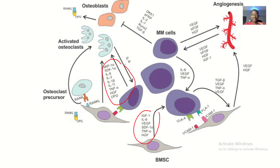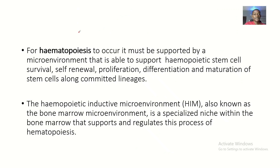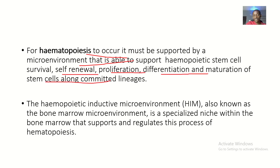When we talk about the composition of the hematopoietic inductive microenvironment, you guys will get to know about all those things. For hematopoiesis to occur, it must be supported by a microenvironment able to support stem cell renewal, survival, self-renewal proliferation, differentiation, and maturation of stem cells along committed lineages. The bone marrow microenvironment is a specialized niche that supports and regulates hematopoiesis.